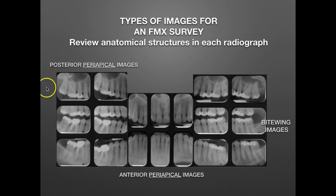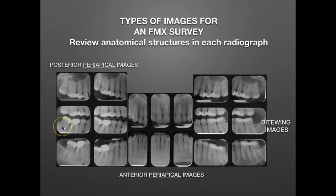Here is a typical FMX survey or FMX series. It has 18 images, and we want to review the anatomical structures in each radiograph so that you know what the dentist is looking for as we take and evaluate our images. Typically there are periapical images posterior for a molar and a premolar in all quadrants, then four bitewing images, and anterior periapical images for the maxillary and mandibular anterior teeth.